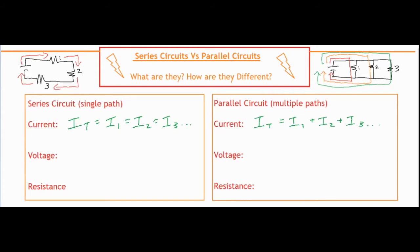So let's take a look at our rule for current for a series circuit to start off with. IT, which is our total current, is equivalent to the current that goes through resistor number one, which is equal to the current that goes to resistor number two and resistor number three and so on. So basically the current is the same everywhere in a series circuit, because there's that single loop and single pathway — the rate of flow for the electrons is going to be the same anywhere in the circuit. As opposed to a parallel circuit, because the electrons break off into different branches or have multiple pathways, the flow of electricity breaks up depending on how much resistance is in each of these different branches.